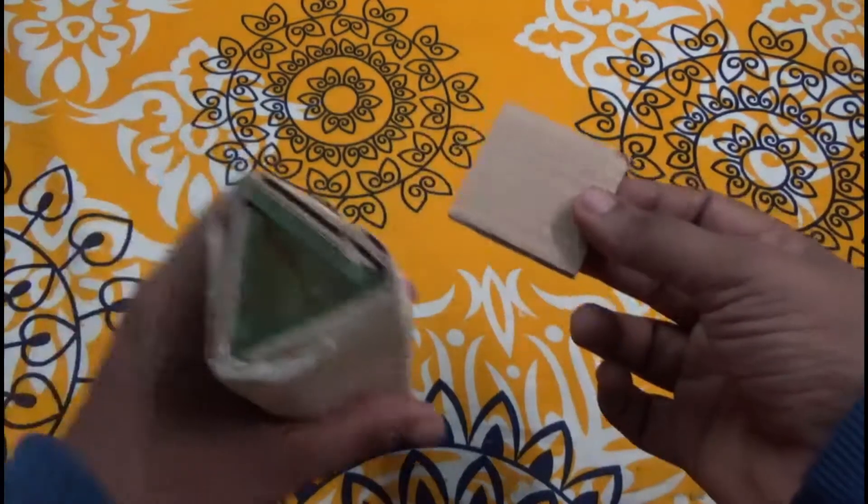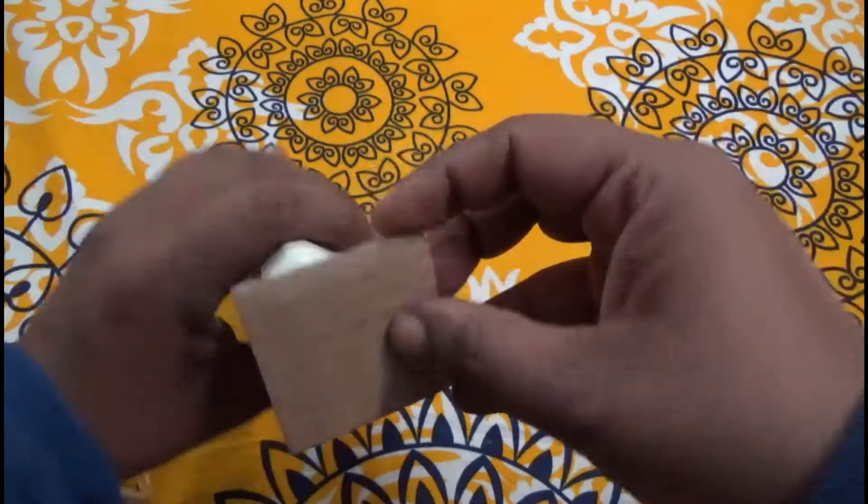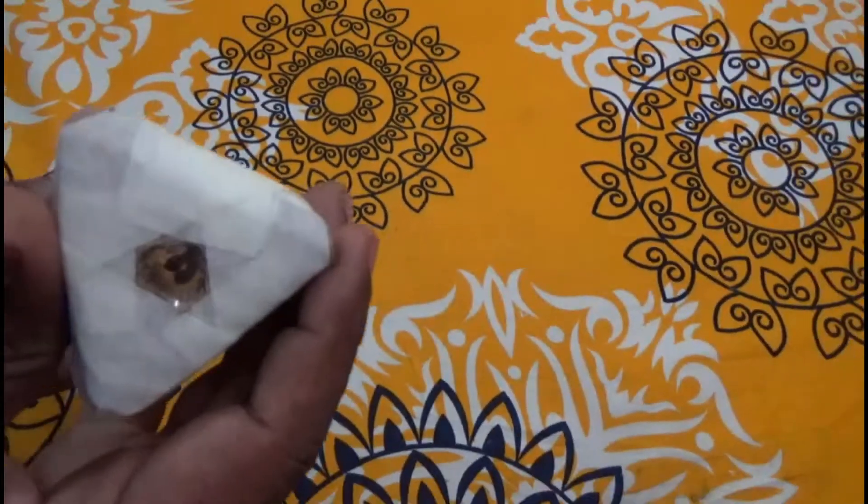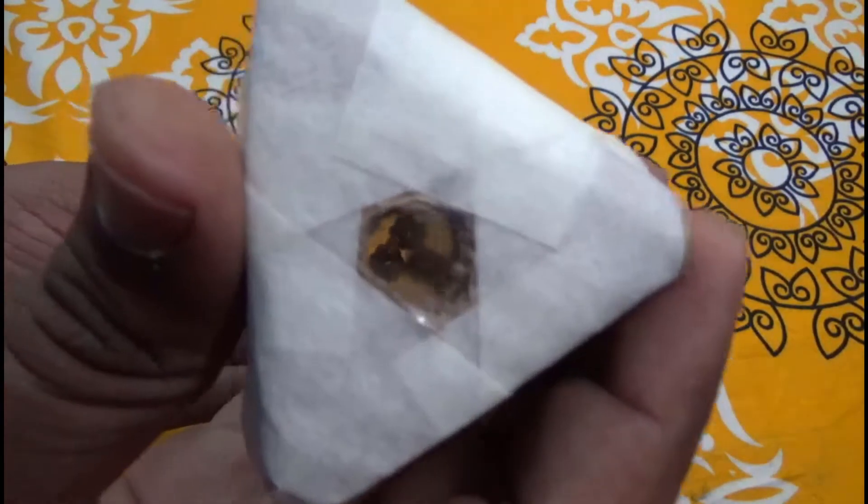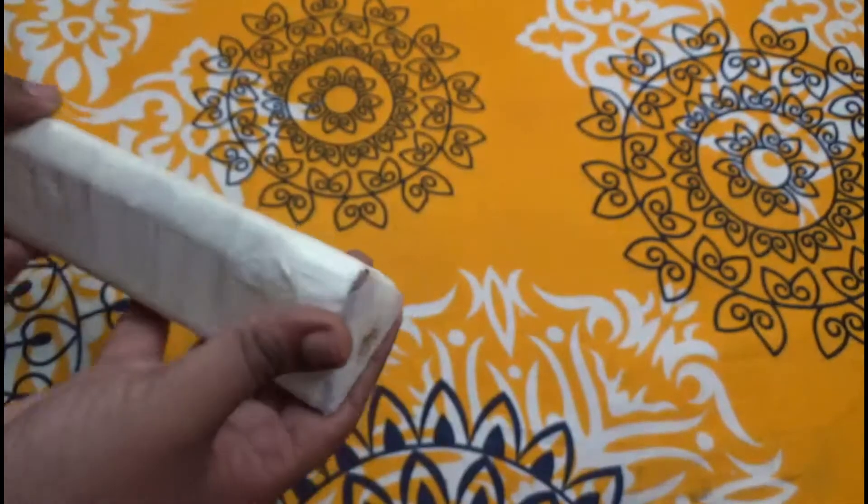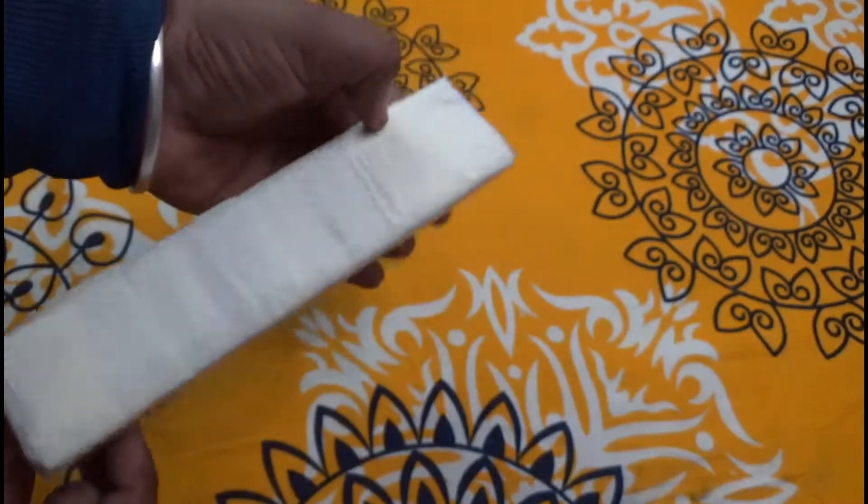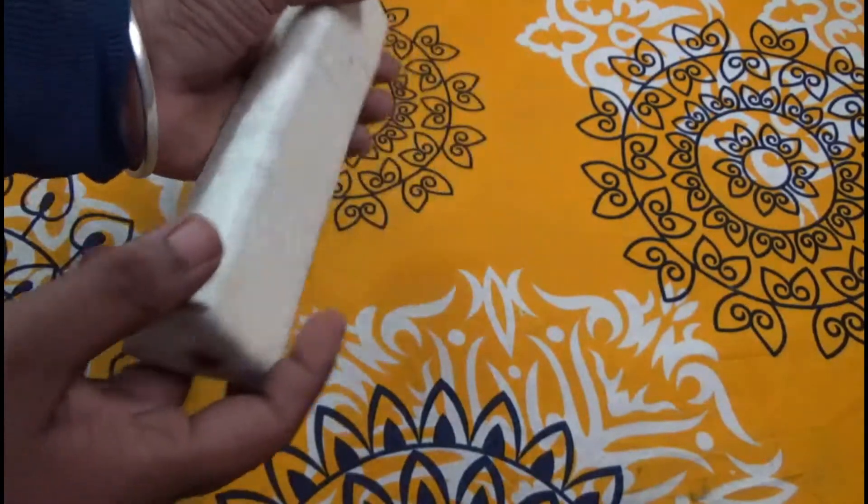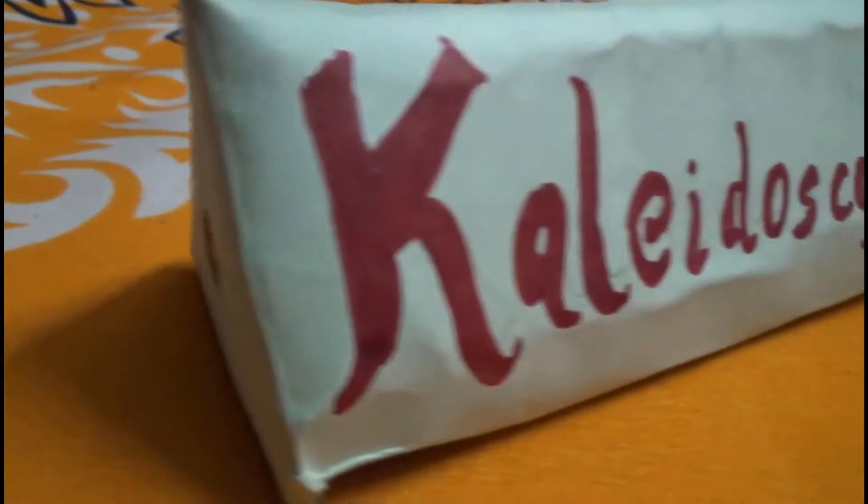Now we are going to take a small piece of cardboard and cover the other end of the kaleidoscope. We are going to make a small hole in our cardboard to make a path from where we are going to see the patterns in our kaleidoscope. With this our kaleidoscope is ready. Now let's decorate it.